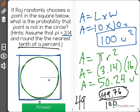And when we round that, we find out that it is 49.8 percent chance that when randomly selecting a point, it will not be in the circle.